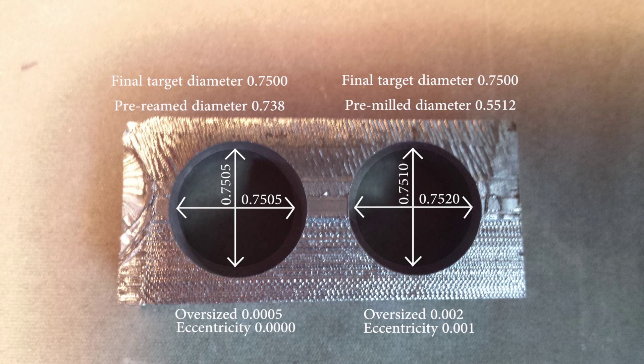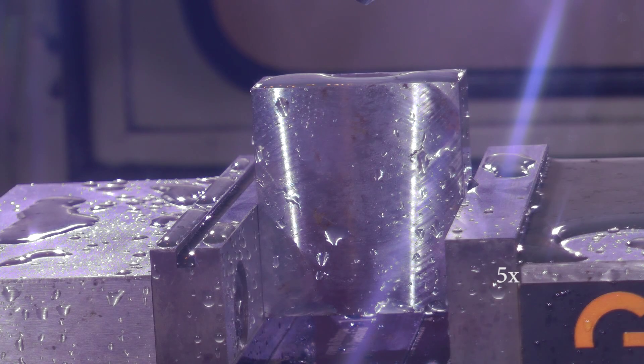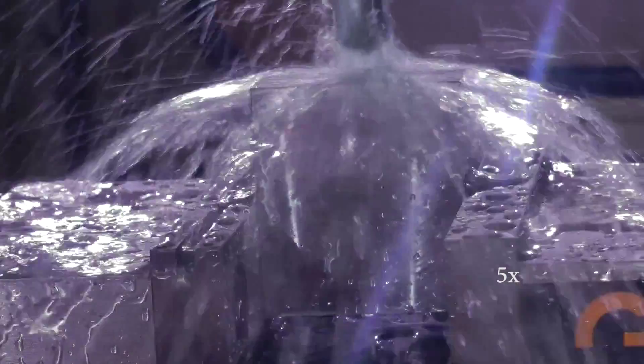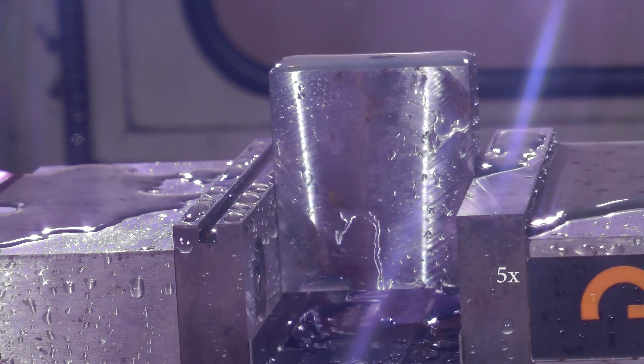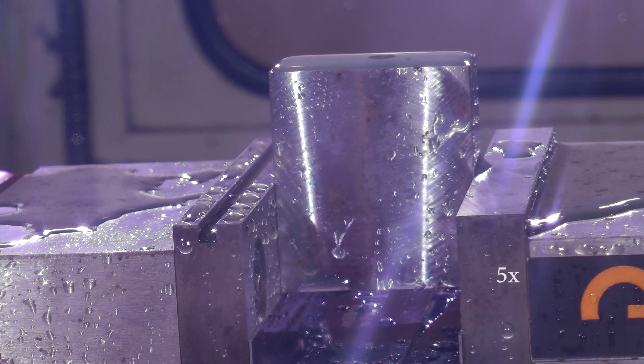There are the comparisons of finish. Here are the comparisons of the measurements taken with a telescoping bore gauge and some calipers. The reamed hole was superior in size and eccentricity, as well as surface finish. So in my mind, reaming is better.